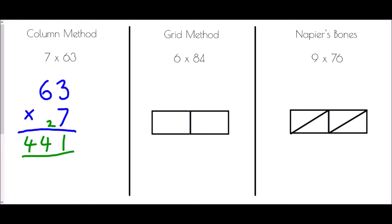Next we have the grid method. The grid method takes us into a situation where we have to split up our numbers, to make sure we get the correct size of all our answers and that we multiply every single element that needs multiplying. In this case I've used 2 boxes because we have 84 — split into 80 and 4. The 6 is on the left-hand side. So first, 6 times 80: 6 times 8 is 48, and because there's a 0 with the 80, I add a 0 onto the end, giving 480. The last box is just 6 times 4, which is 24.